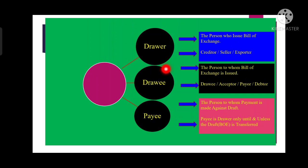The drawee is the person to whom the bill of exchange is drawn. When the drawer issues the bill of exchange, it is issued to someone — and the drawee is that person. There are multiple names for the drawee: it can be called the acceptor because it has to accept the bill; once it has accepted the bill, it is called the acceptor. When it has paid the bill, it is called the payer. It is also called the debtor.